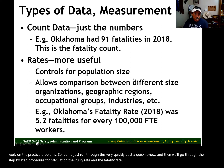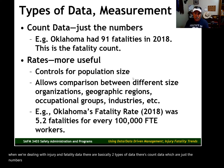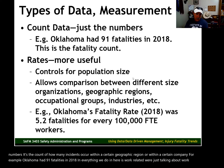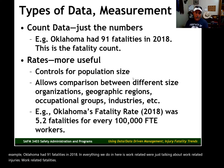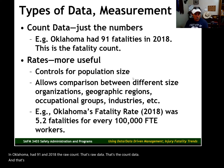When we're dealing with injury and fatality data, there are basically two types of data. There's count data, which are just the numbers — the count of how many incidents occurred within a certain geographic region or within a certain company. For example, Oklahoma had 91 fatalities in 2018. Everything we do here is work-related: work-related injuries, work-related fatalities. Oklahoma had 91 in 2018. That's the raw count data, and that's useful — you can use that information as a safety manager.